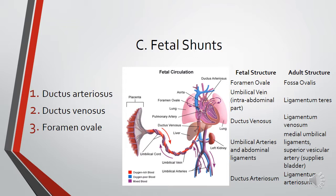There are three fetal shunts unique to the fetus. First, the ductus arteriosus: it protects against circulatory overload, allows the right ventricle to gain strength, has high pulmonary vascular resistance and low pulmonary blood flow, and carries mostly oxygenated blood. Next, the ductus venosus: a fetal vessel connecting the umbilical vein to the inferior vena cava, with blood flow regulated via a sphincter, carrying mostly highly oxygenated blood. Finally, the foramen ovale shunts highly oxygenated blood from the right atrium into the left atrium.